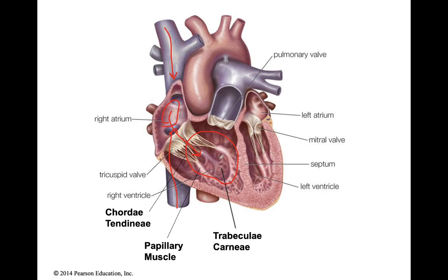That blood will pump down into the right ventricle. The right ventricle will then shoot the blood out of the pulmonary trunk, and then to the left lung and the right lung through what's called the pulmonary artery. Arteries are blood vessels that are moving away from the heart — vessels that pump blood away from the heart.